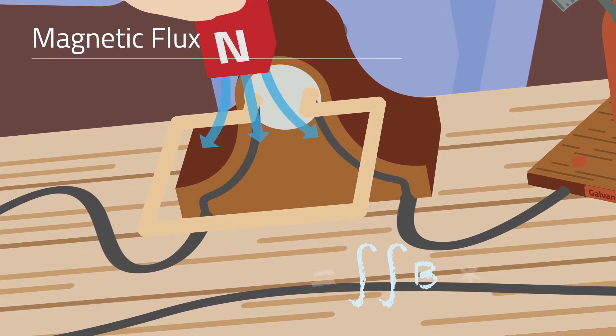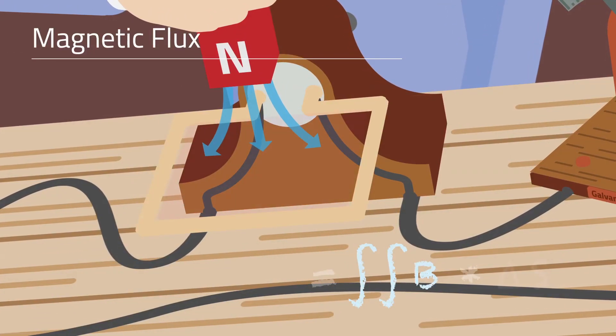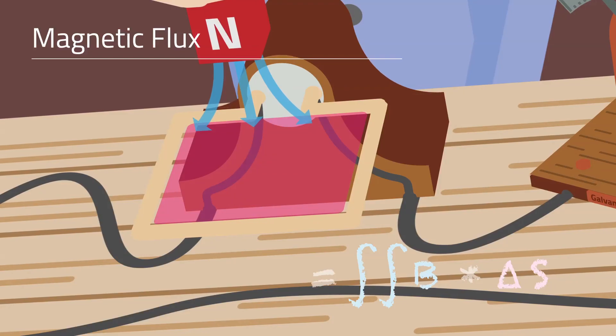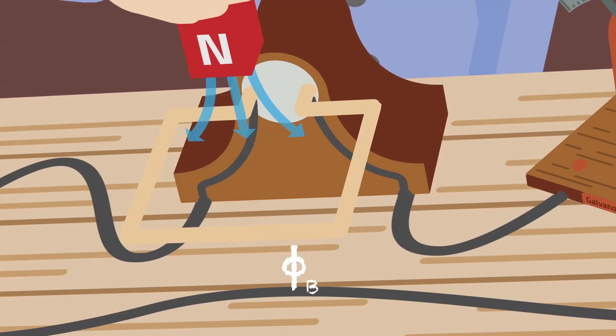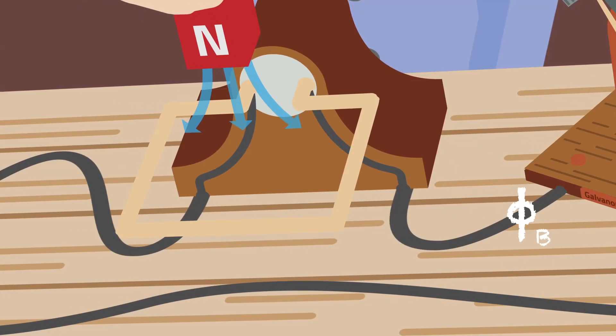But how does this work? The magnetic field lines passing through a certain surface is called the magnetic flux. The word flux originates from the Latin word fluxus, that means flow.